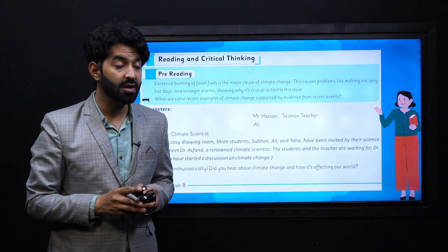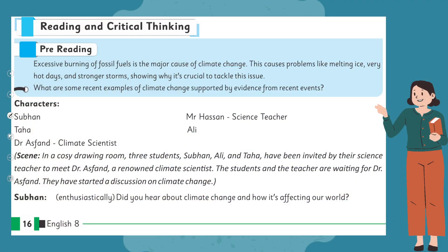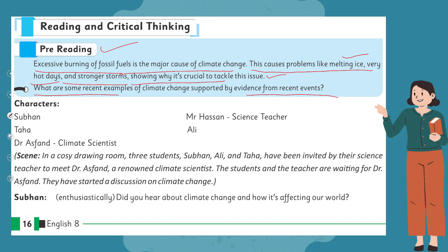Now let's read our lesson from page 16 of the book. Here we have a pre-reading question: excessive burning of fossil fuels is the major cause of climate change, which causes problems like melting ice, very hot days, and stronger storms — showing why it's crucial to tackle this issue. What are some recent examples of climate change supported by evidence from recent events? Ponder upon these pre-reading questions and let's get started with reading our lesson.